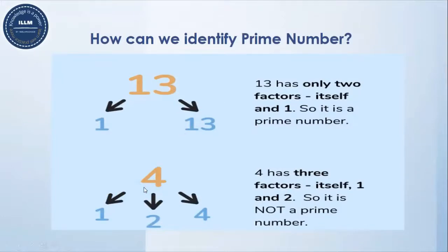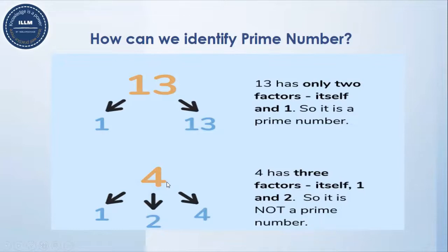Now let's have a look at four. Four is a number which is having more than two factors: one, itself, and two. So four has three factors — one, itself, and two. Therefore this is not a prime number. A prime number has only one condition: it should have only two factors — one and itself.